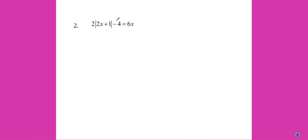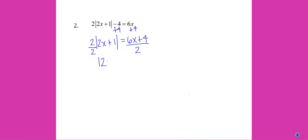Another example. This time there's some other stuff on the left-hand side of the equation along with the absolute value. You need to get the absolute value by itself first. Add 4 to both sides.